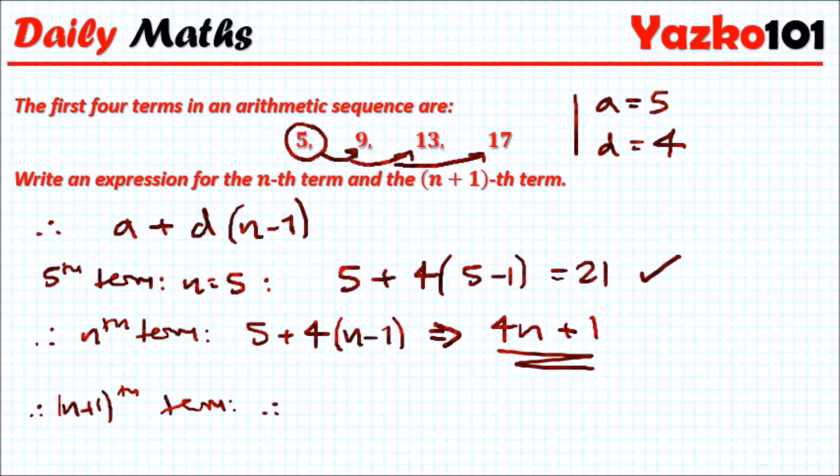So therefore, we have 4 bracket (n+1) plus 1. And this gives us 4n plus 4 plus 1. So it will give us 4n plus 5.